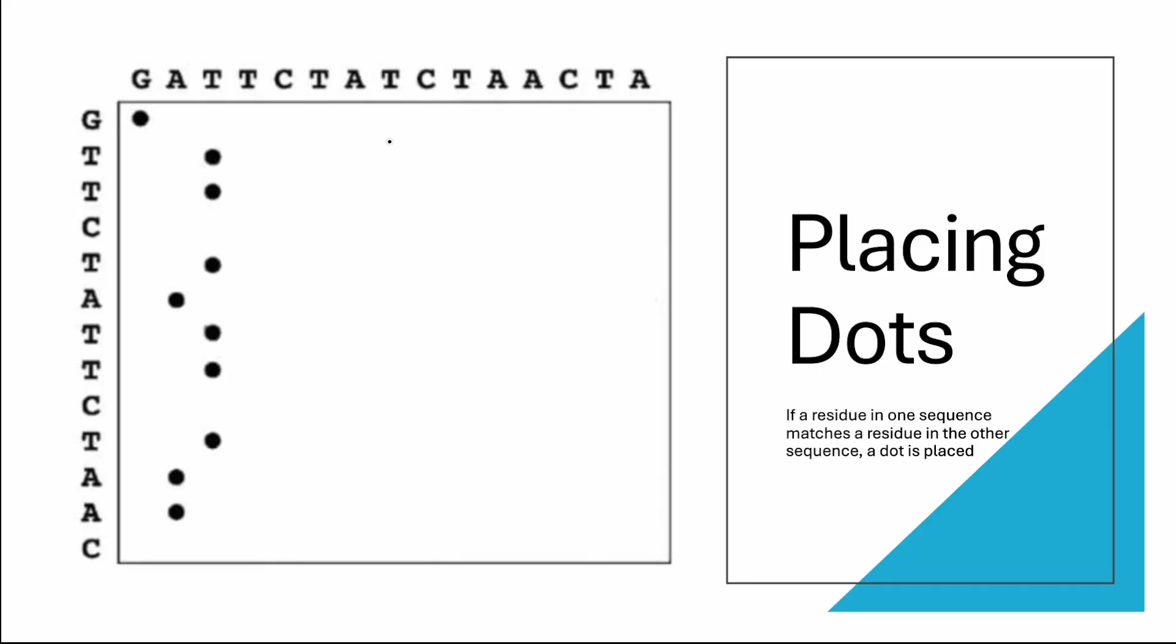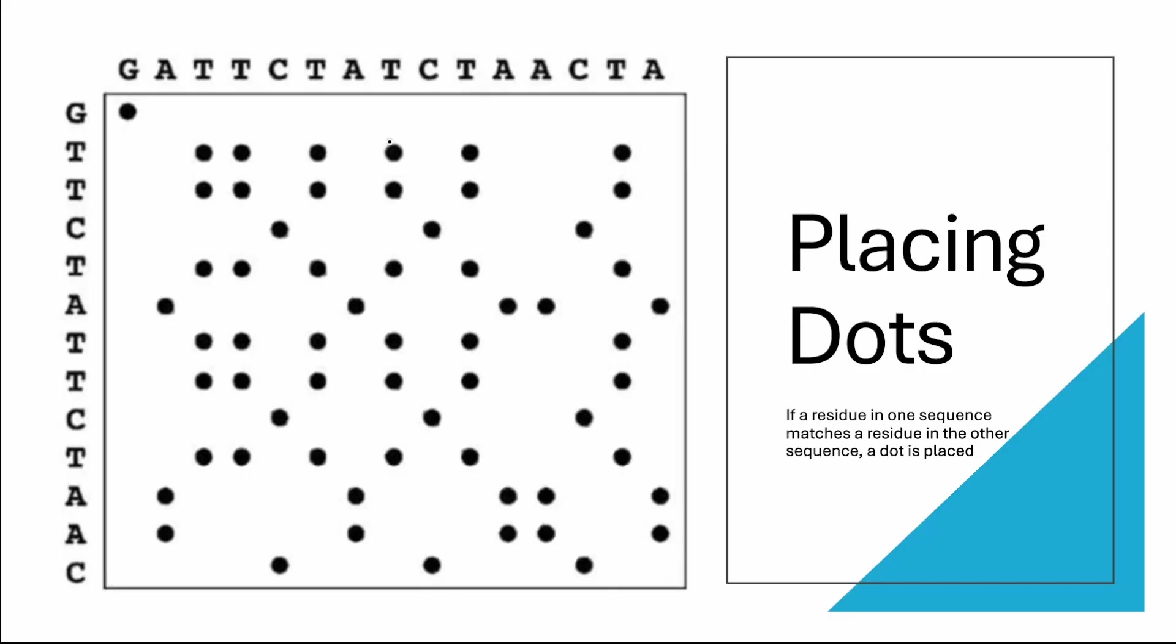In this way, we completed the next line and I have placed all the dots in this matrix. Usually, the next step after this is to find the diagonal lines and trace them.